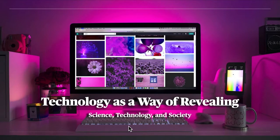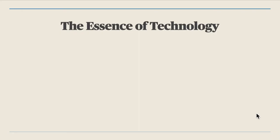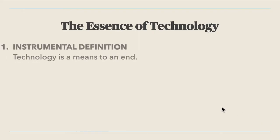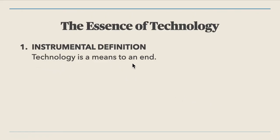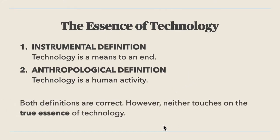Hi folks, we are now in our next video in Science, Technology and Society, here to talk about technology as a way of revealing. We have two types of definitions of the essence of technology: first, the instrumental definition, which says technology is a means to an end; and second, the anthropological definition, which says technology is a human activity. Both definitions are correct, however neither touches the true essence of technology.